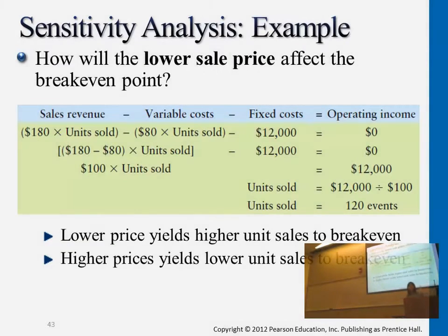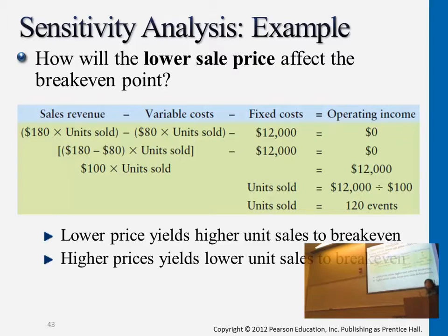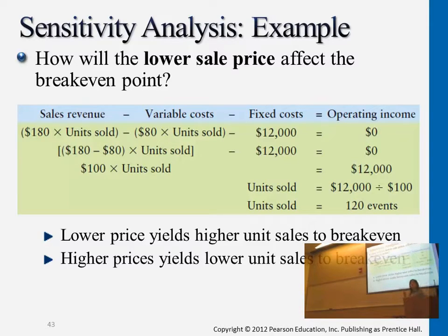Same example here. Let's say variable cost remains the same at $80, fixed cost remains the same, but for each and every unit we only sell it at $180 now. Let's say the economy is not doing well and we're not meeting enough sales revenue as planned, so we decided to give customers some discounts, selling at $180. So then do we have an increase or decrease in break-even sales in units? If we lower down the sales revenue for each DJ services event, how are we able to meet the zero income goal?